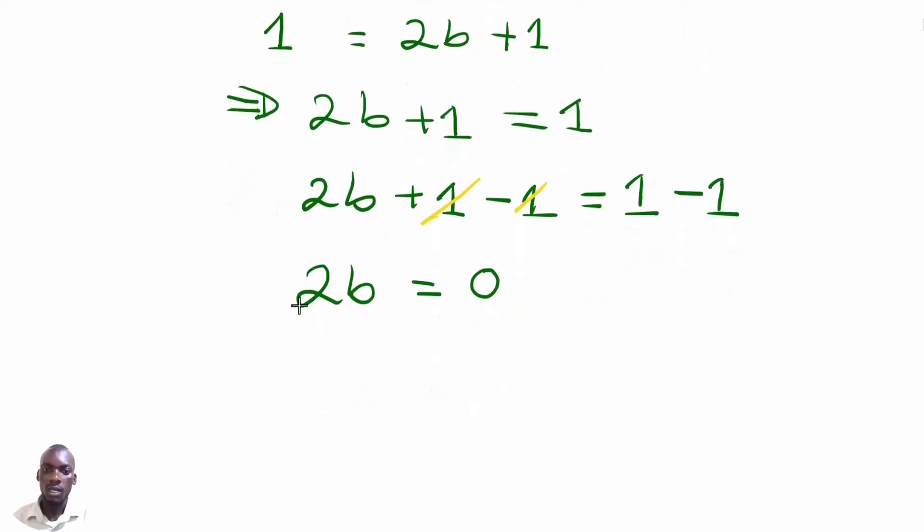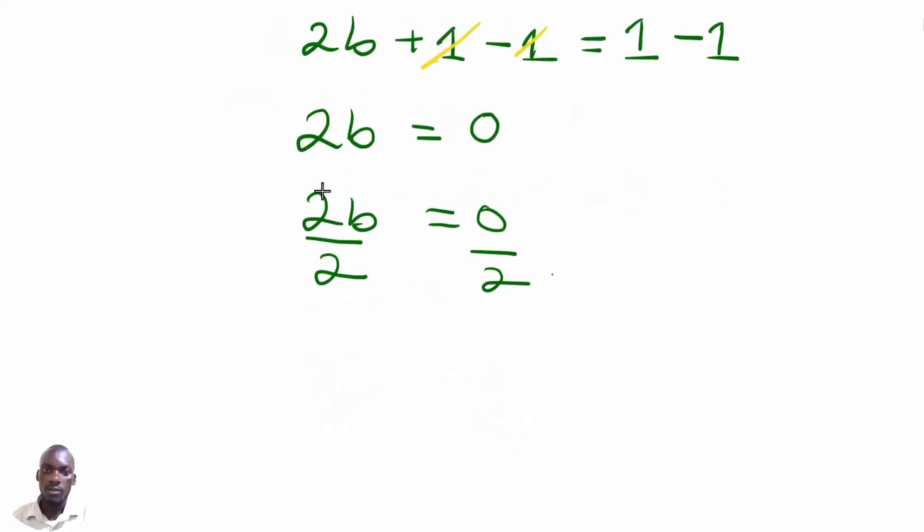Then from here, to make b the subject, we are going to divide through by 2 on both sides. So we have divided by 2, divided by 2. So this 2 by 2, then 1 multiplied by b, we have our b.